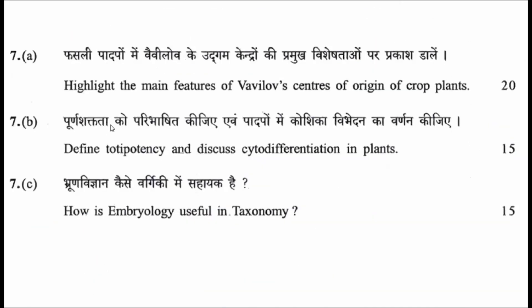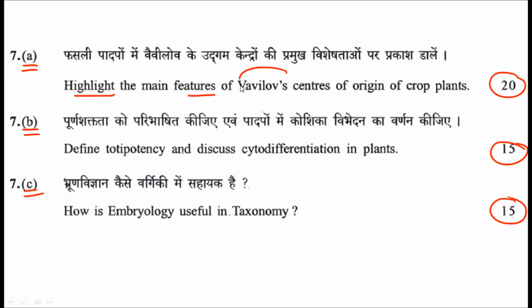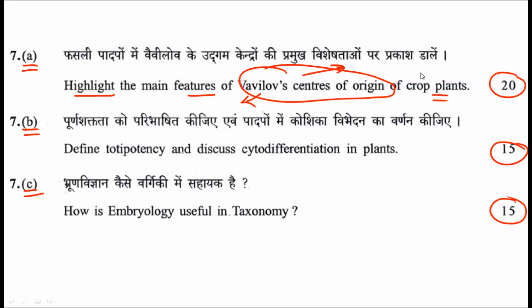Question seven is divided into three parts — A, B, and C — carrying 20, 15, and 15 marks. The first sub-question asks you to highlight the main features of Vavilov's centers of origin for crop plants. Vavilov identified primary and secondary centers of origin for crop plants, and you have to describe all these centers to earn 20 marks.